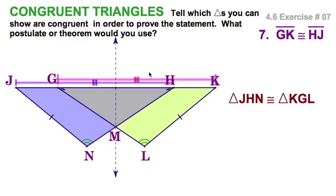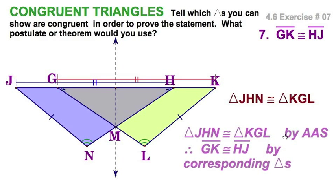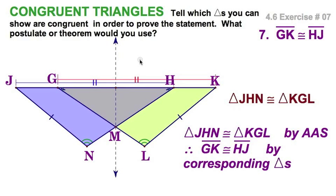These are their parts. Remember, HJ and GK are parts of the triangle — they do overlap, so be careful. If I wrote it out, I would write: the two triangles are congruent by angle-angle-side, and therefore segment GK is congruent to segment HJ by corresponding parts.